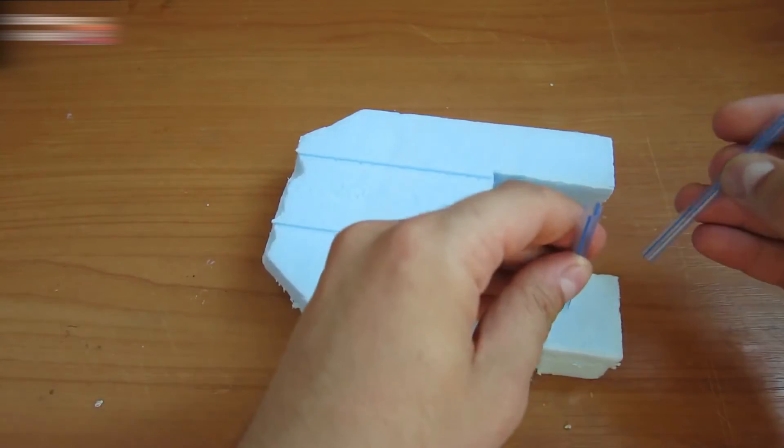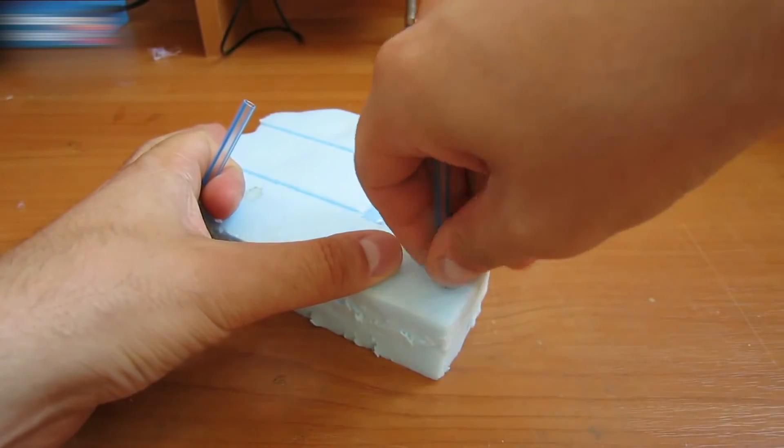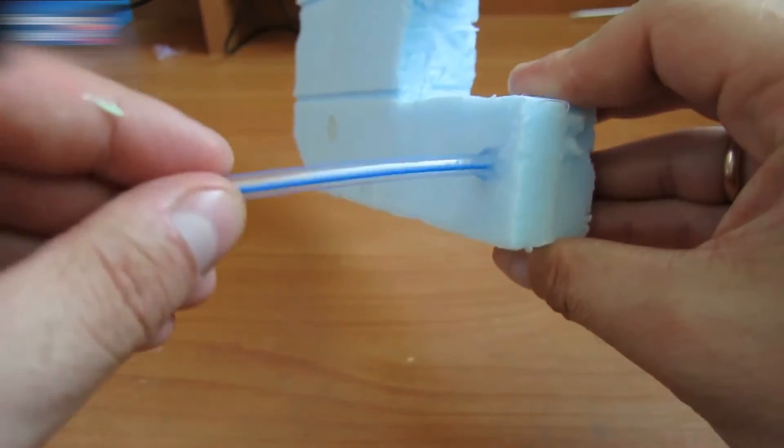Cut the drinking straw in two and force the pieces into the styrofoam to make dents. Glue them with a glue gun. The thing is firm.